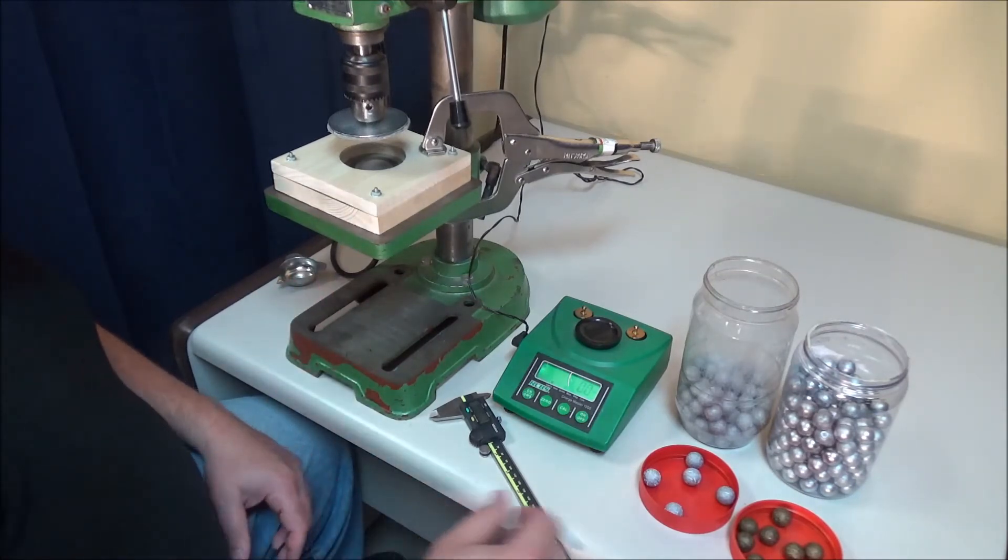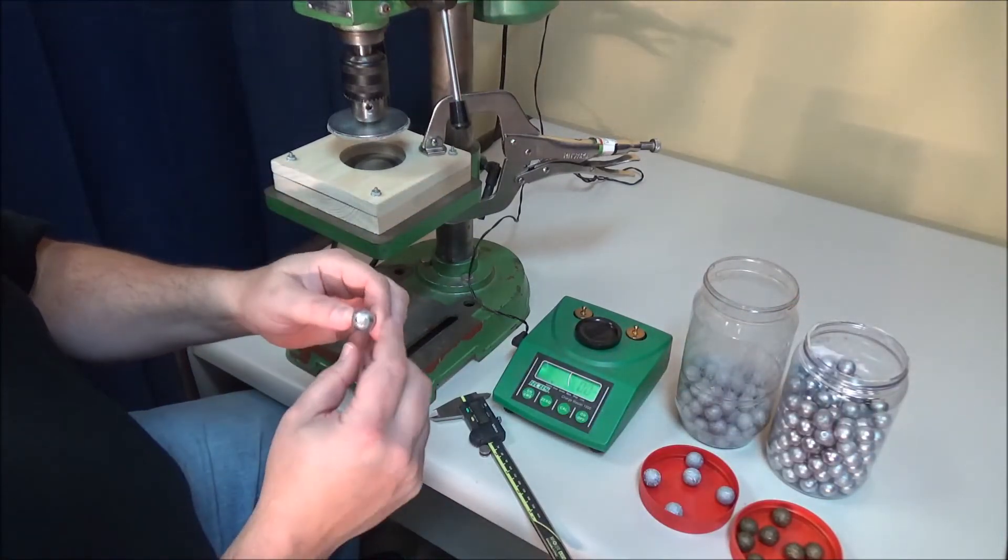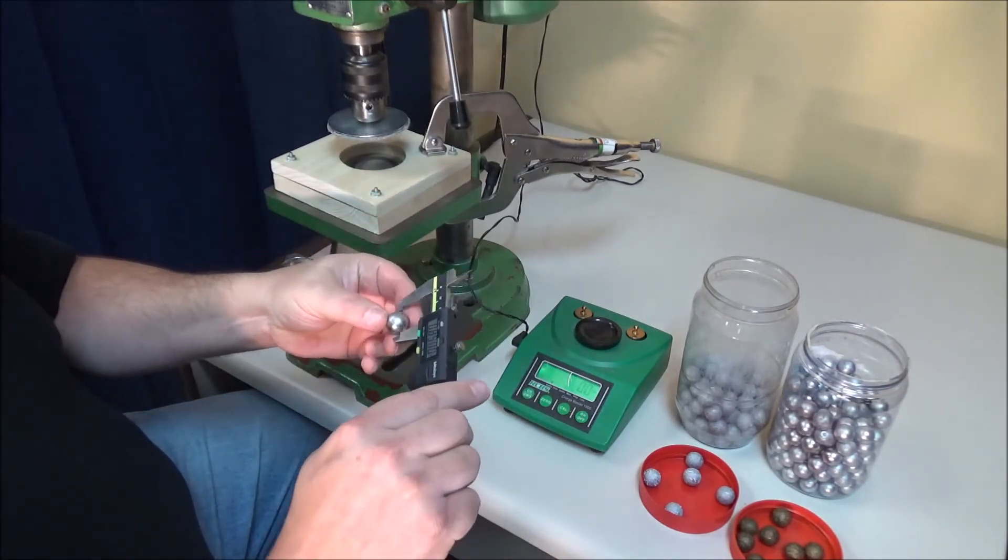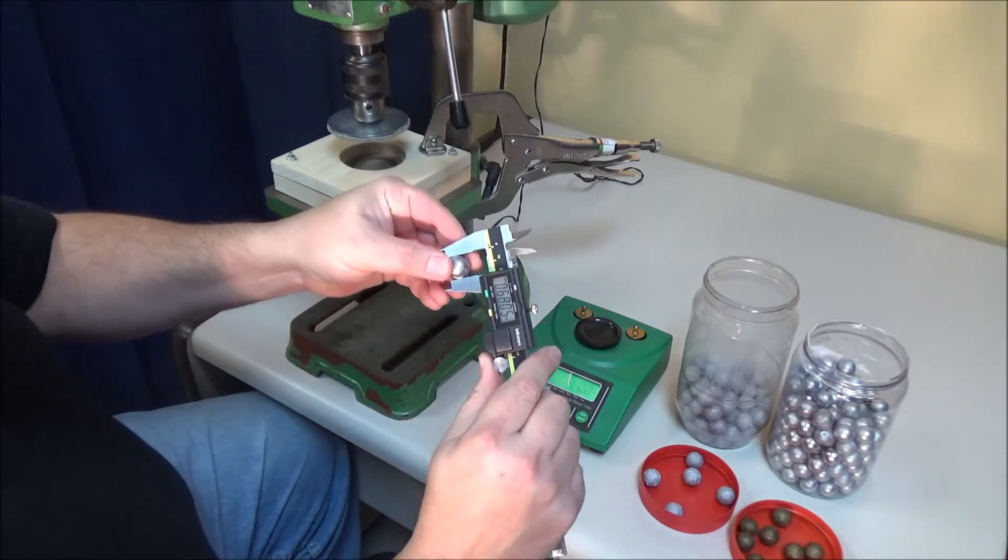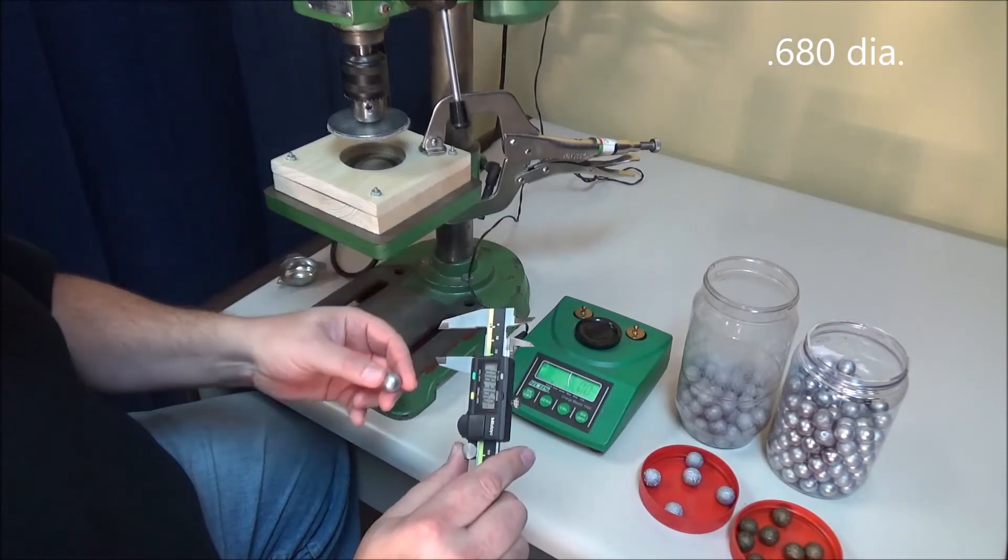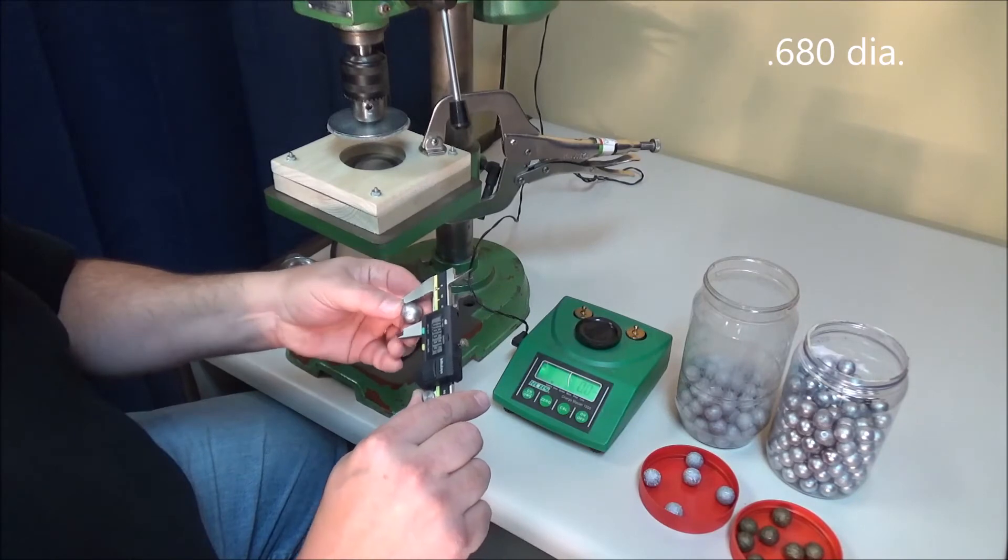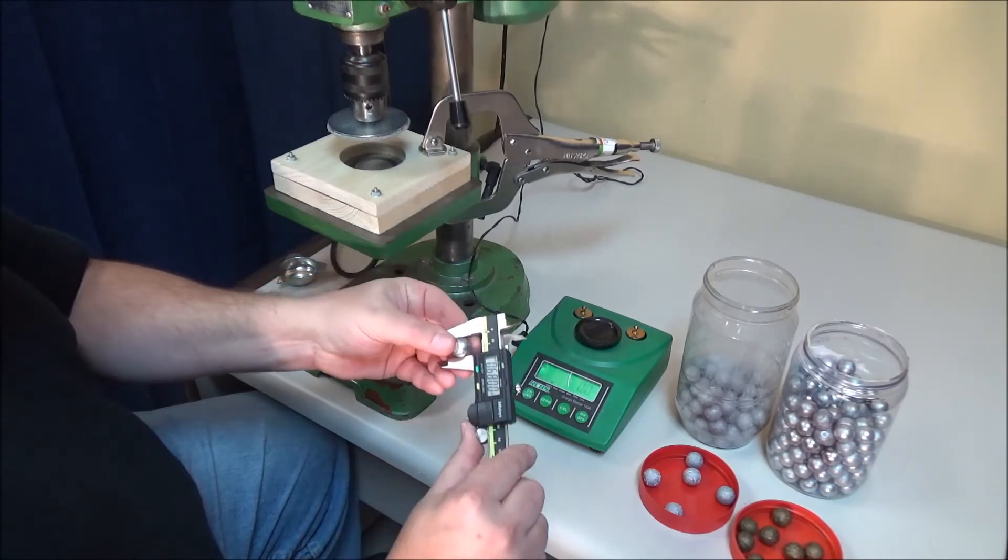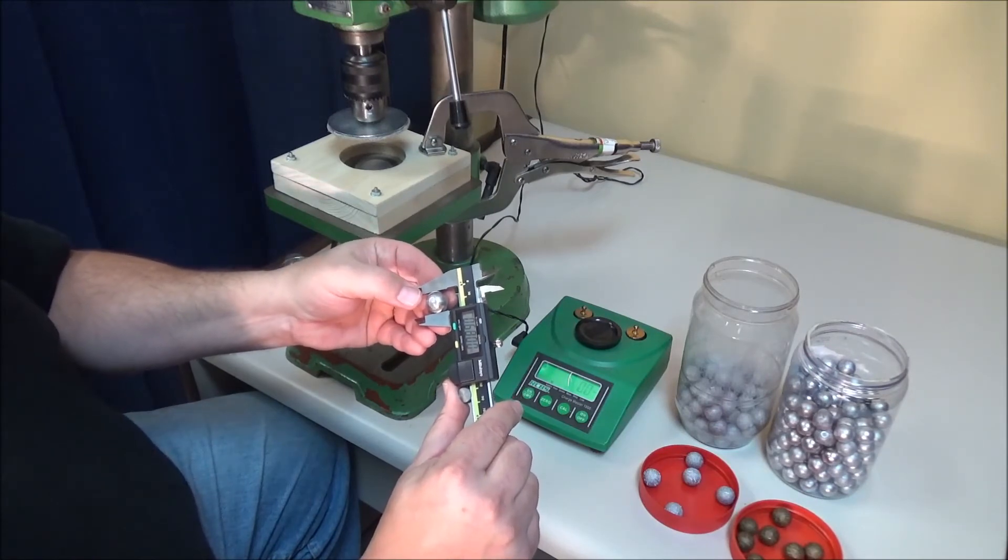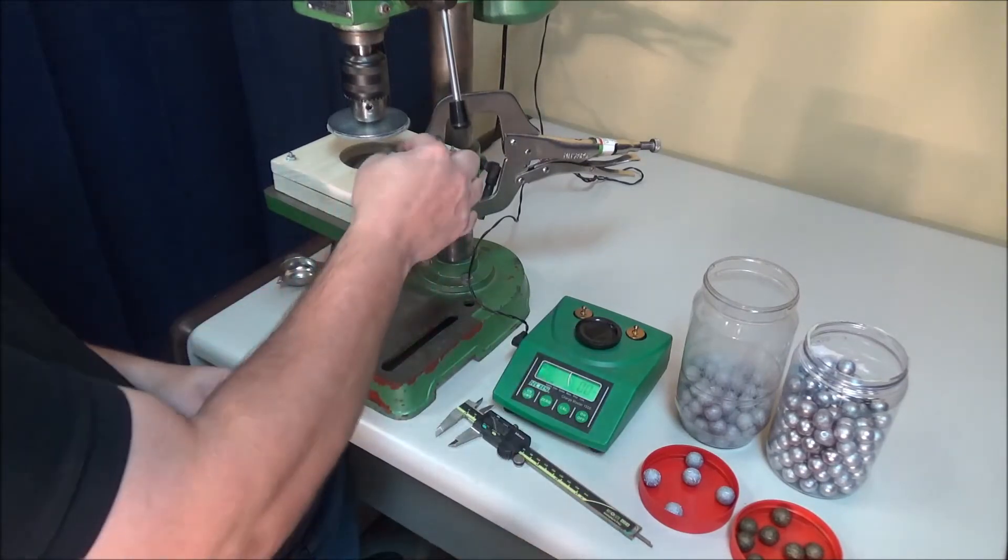So now let's take a look at the change in diameter. Alright, so here's a wheel weight ball as cast. And we'll take a measurement of it here. And I'm getting about 0.680. And this is a RCBS mold 0.678 is the mold diameter itself. So 680, so that's about what we're getting across the sprue, across the parting line is about a 0.680 diameter ball. So 0.680. So let's process it.